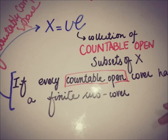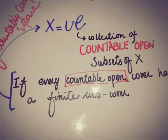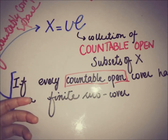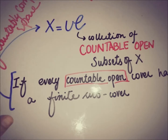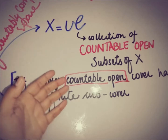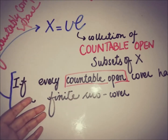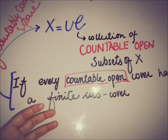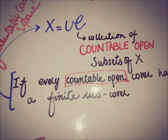We can say that every compact space is countably compact. Because if every open cover of X has a finite subcover, then every countable open cover also has a finite subcover. In compact spaces there is no restriction on whether the collection is countable or not — we only need a finite subcover. So from the definitions, every compact space is a countably compact space.